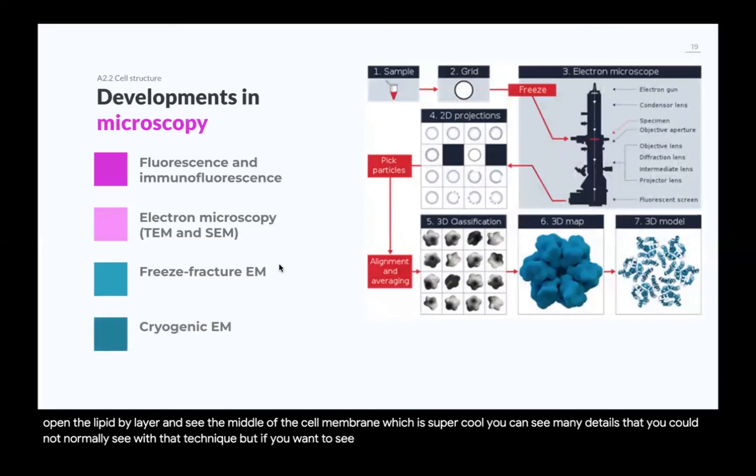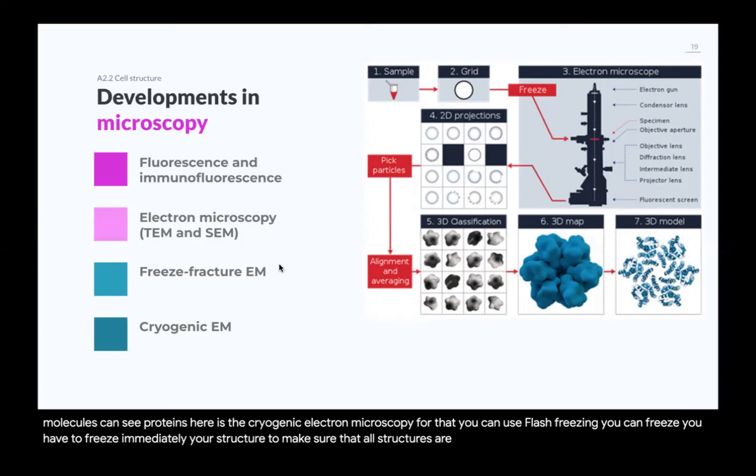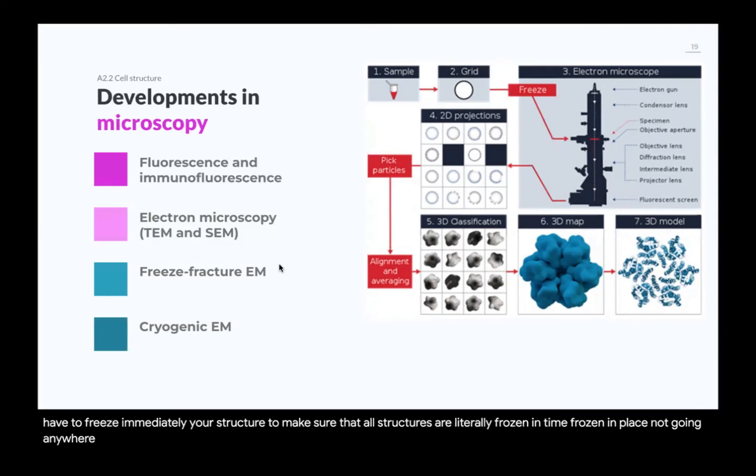But if you want to see even further, greater resolution in the order of proteins, you can see molecules, you can see proteins here, is the cryogenic electron microscopy. For that, you can use flash freezing. You have to freeze immediately your structure to make sure that all structures are literally frozen in time, frozen in place, not going anywhere. And then you use this very special, very complicated microscope to generate images, 3D models of the proteins.